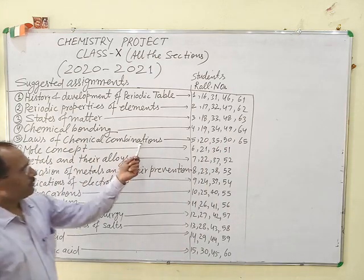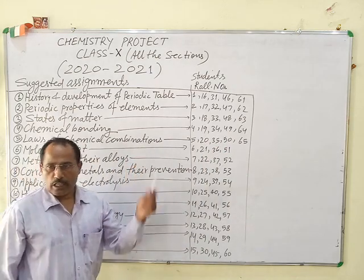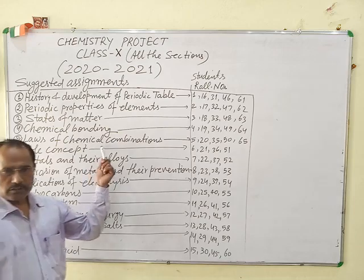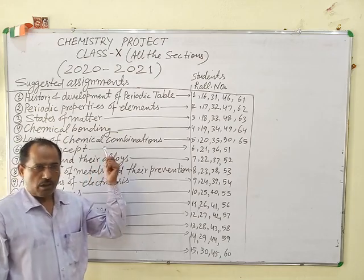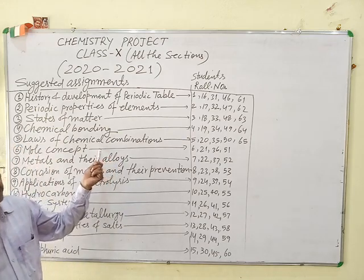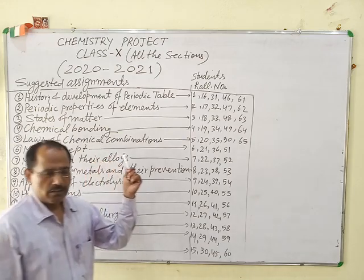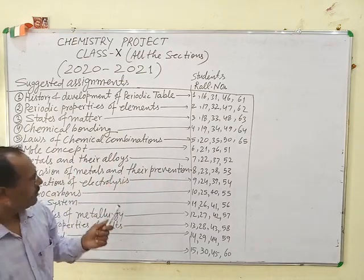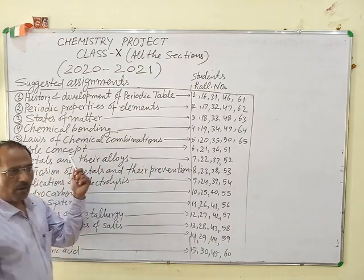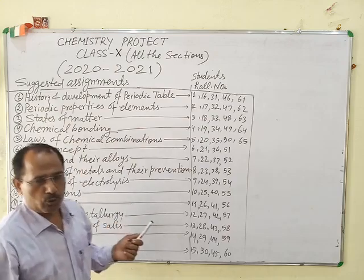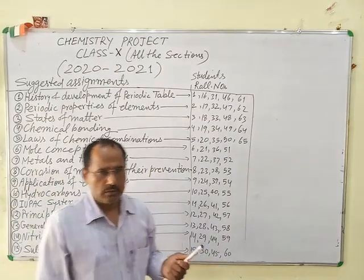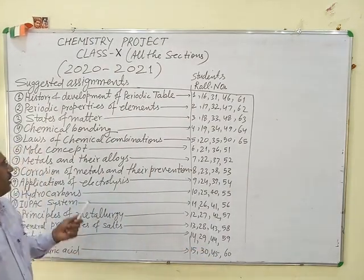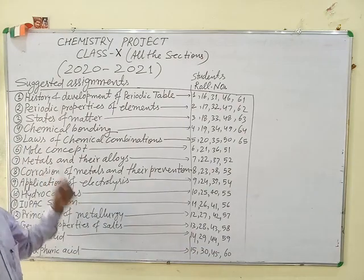Laws of chemical combinations — there are 5 laws of chemical combinations: 1st law of conservation, 2nd law of conservation, 3rd law of multiple proportions, 4th law of reciprocal proportions.